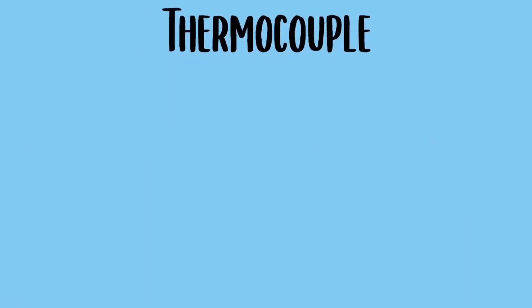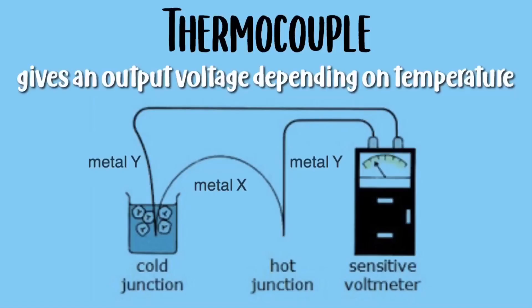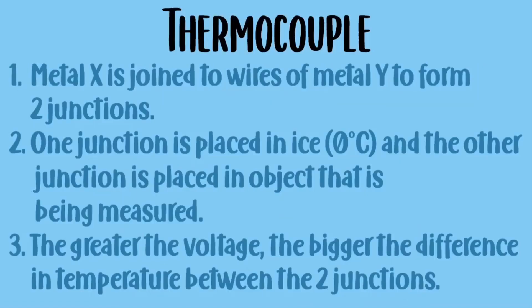Now let's talk about a thermocouple, which gives a voltage depending on its temperature. To set up a thermocouple, metal X is joined to metal Y to form two junctions. One junction is placed in ice at 0 degrees Celsius, and the other junction is placed in the object that is being measured. The greater the voltage, the bigger the difference in temperature between the two junctions.